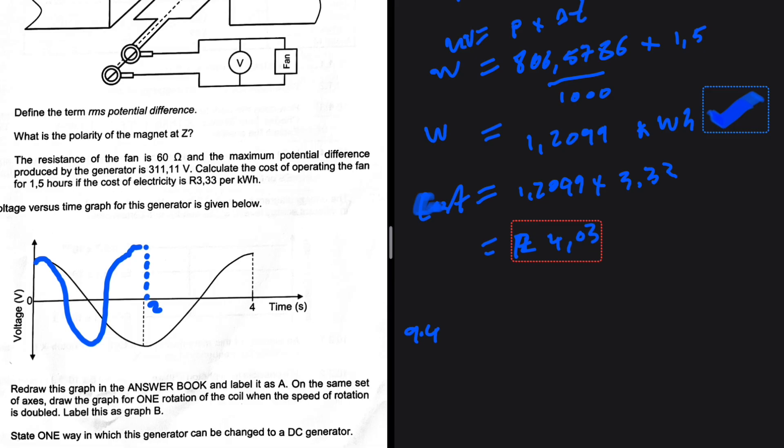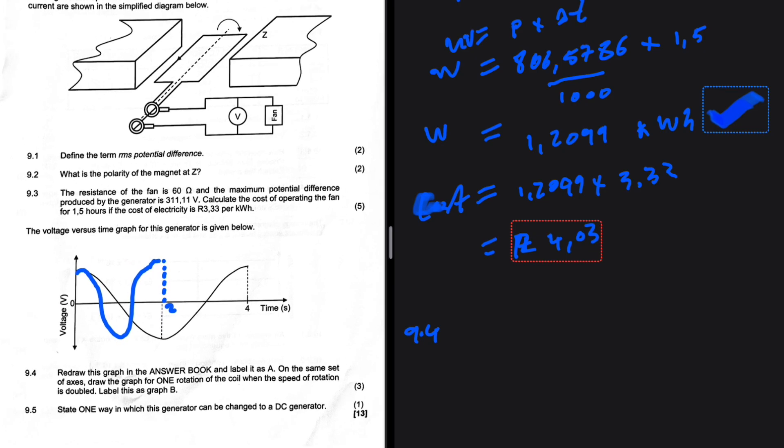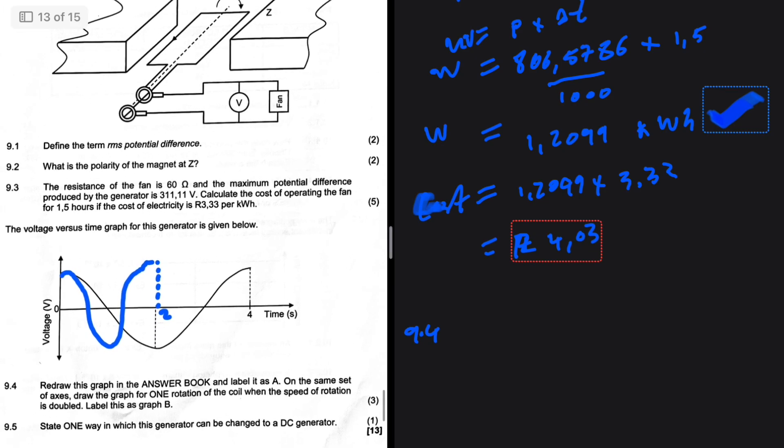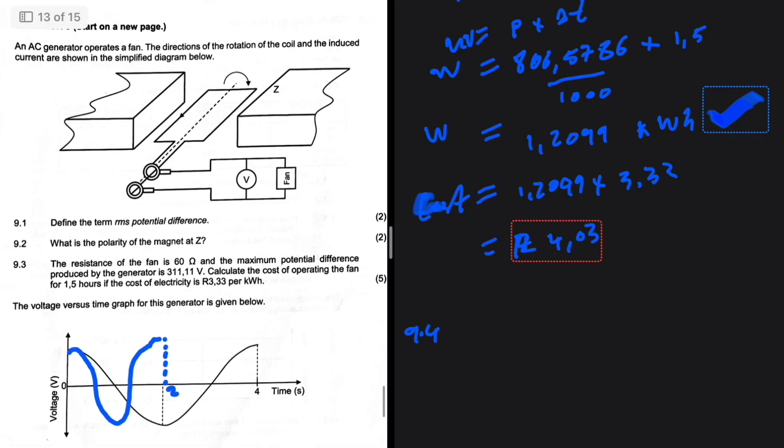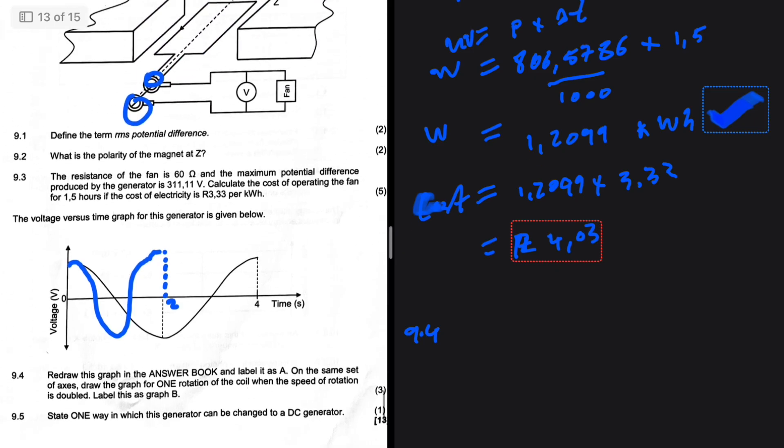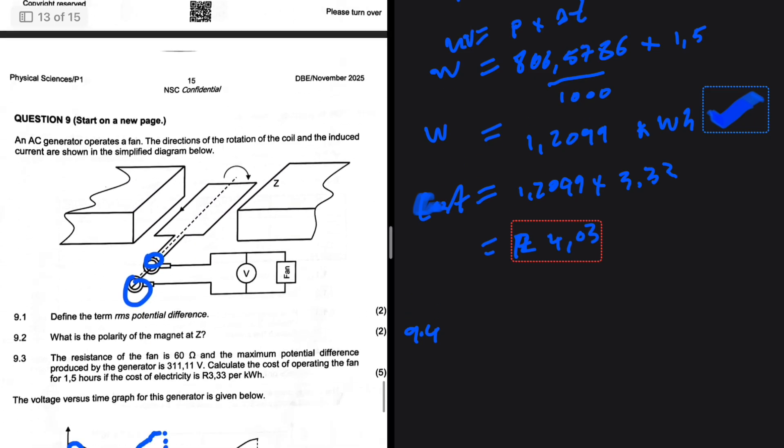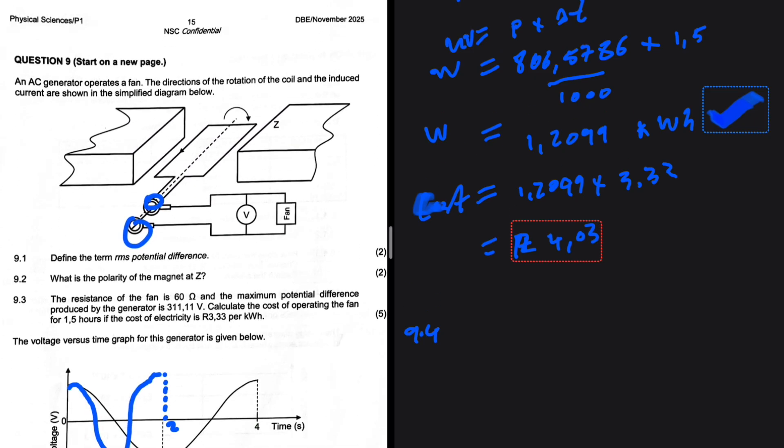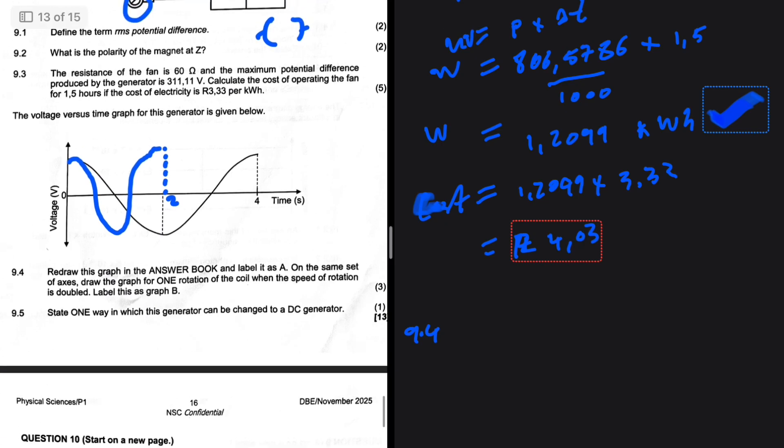Question 9.5: State one way in which this generator can be changed to a DC generator. It's a question of AC to DC. What are we looking at? We're looking at slip rings. When we change AC to DC, we're changing the slip rings to a split ring. So we can change the slip rings to a split ring.